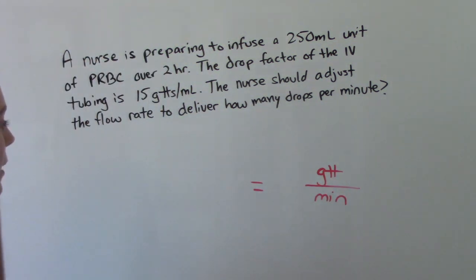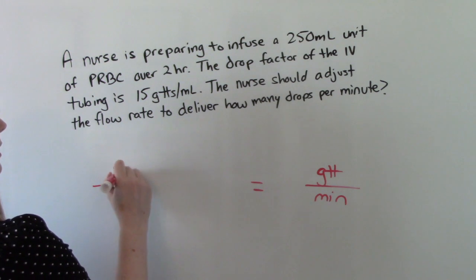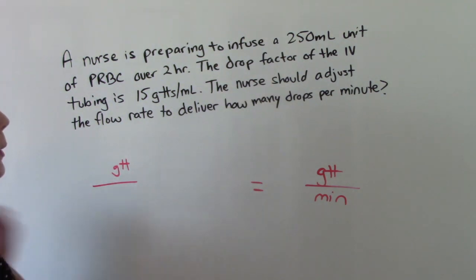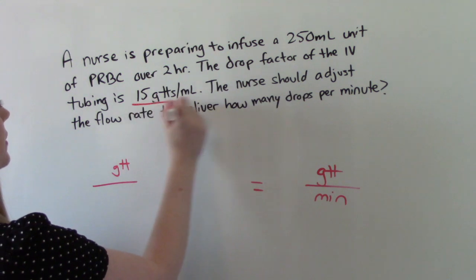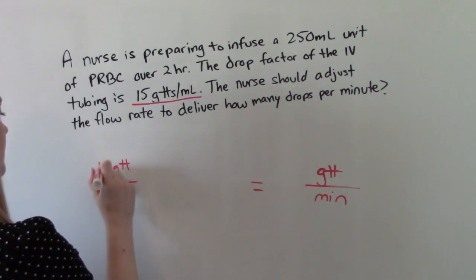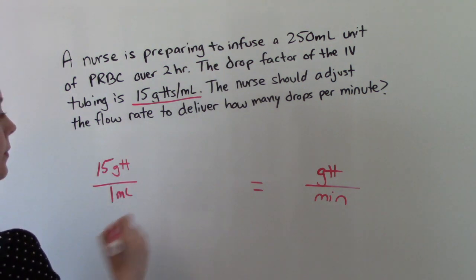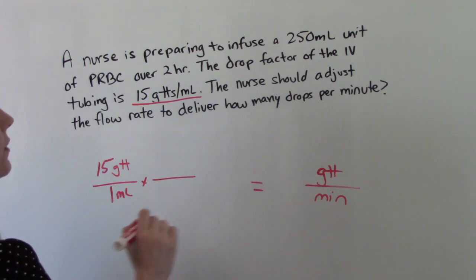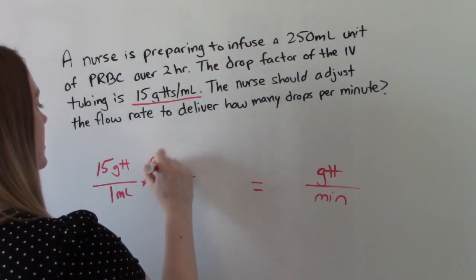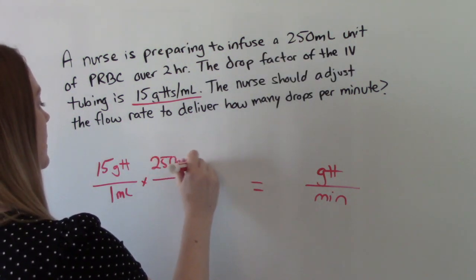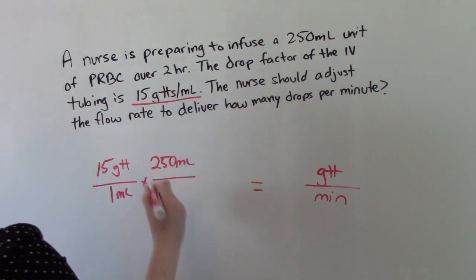So let's set up our equation. We need drops in our numerator. Where do we see it here in the problem? Right there. 15 drops over 1 ml. And then what are we giving? 250 ml's over 2 hours.